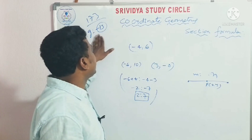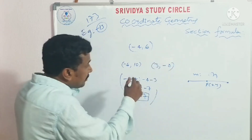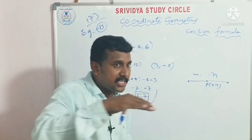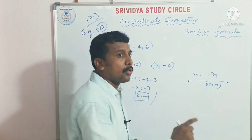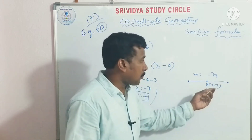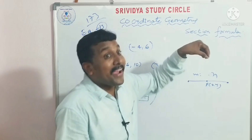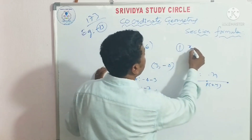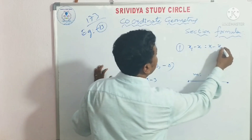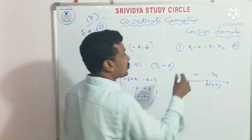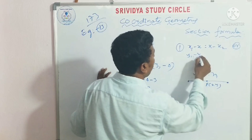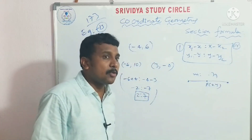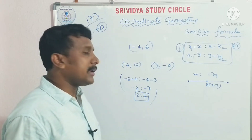This is an important question — check your paper. Master this formula. If you have two points that form a line segment, and one more point divides it in some ratio, you need to find that ratio. The formula is: x1 minus x is to x minus x2. This is a very important formula.